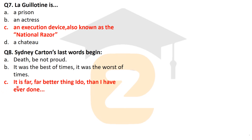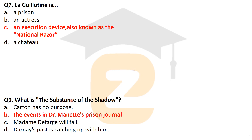The next question: Sidney Carton's last words begin with: 'It is a far, far better thing I do than I have ever done.' This was the last line in the novel A Tale of Two Cities, said by Sidney Carton. The next question: what is 'The Substance of the Shadow'? That was the events in Dr. Manette's prison journal, known as such in the novel.